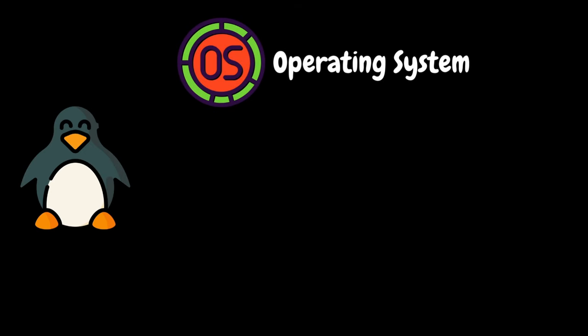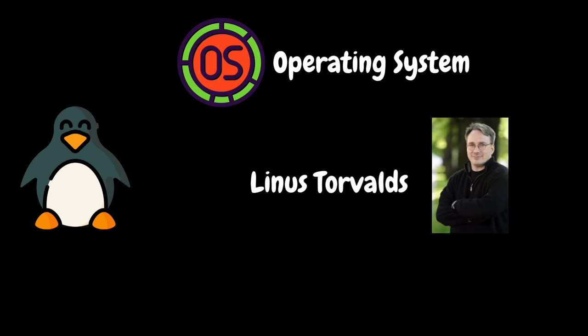So, what is Linux? Same like Windows, it is an operating system that is developed using an open source model by Linus Torvalds in the early 1990s. Basically, an operating system is a collection of softwares that manages the hardware resources and provides an environment for users to interact with the softwares or applications to execute the required tasks.